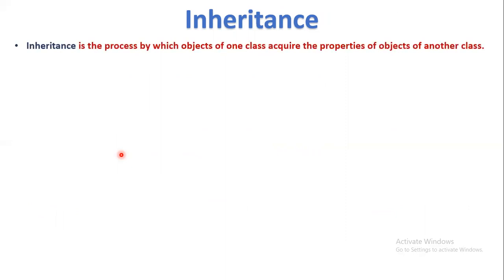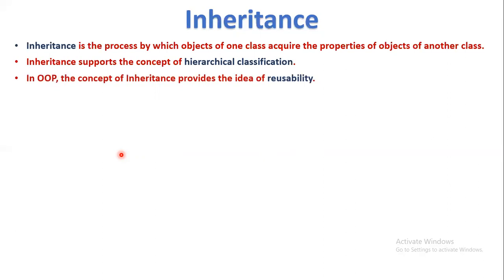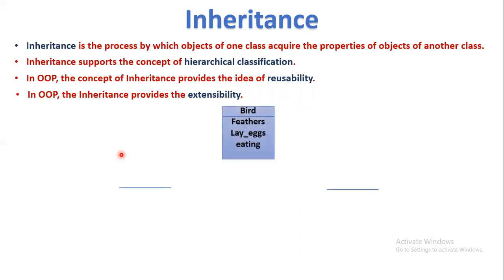The next principle is inheritance. Inheritance is the process of acquiring properties from an existing class to a newly defined class. Inheritance supports the concept of hierarchical classification. In OOP, inheritance provides the idea of reusability — properties and methods from an existing class can be reused by another class. Inheritance also enables code extensibility, meaning we can add extra properties to a newly defined class from an existing class.